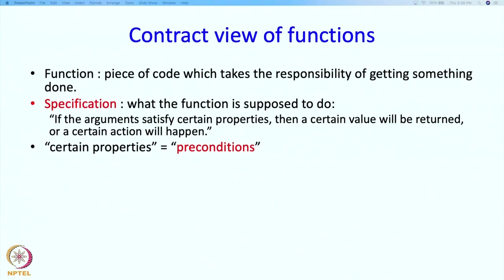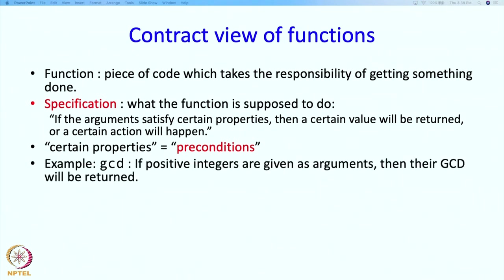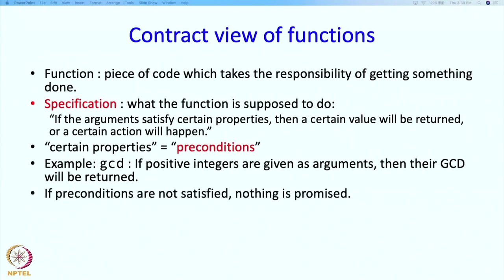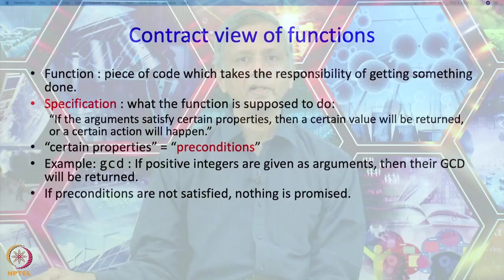These certain properties are sometimes called preconditions. For example, for GCD you might say: if positive integers are given as arguments then their GCD will be returned. If the precondition is not satisfied — for example if you give negative values — then nothing is promised. The program may run forever or return some nonsense, but the writer of GCD is not making any claim about what will happen.